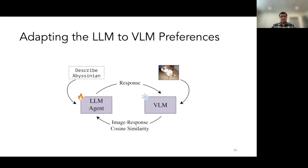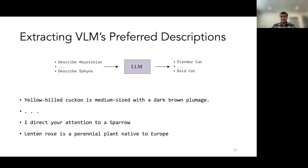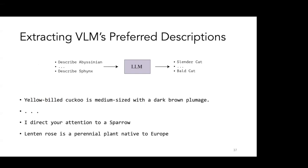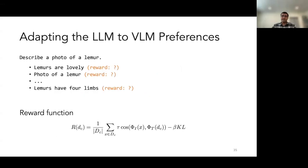The KL divergence term in PPO measures the divergence between the current model and the starting model. Without it, the model changes so much that generations become nonsensical — random characters and words. Adding the KL term keeps the updated model close to the original, so we get sensible descriptions that can be analyzed. This is standard in RLHF work.